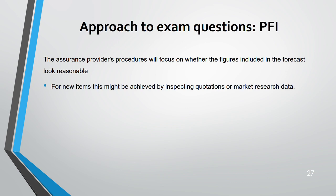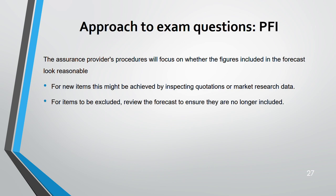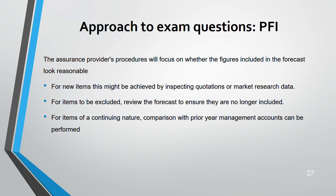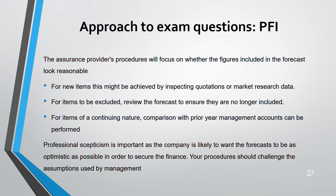The assurance provider's procedure will focus on whether the figures included in the forecast look reasonable. For new items, this can be achieved by inspecting quotations or market research data. For items that need to be excluded, review the forecast to ensure they are no longer included. For continuing items, compare with the previous year.